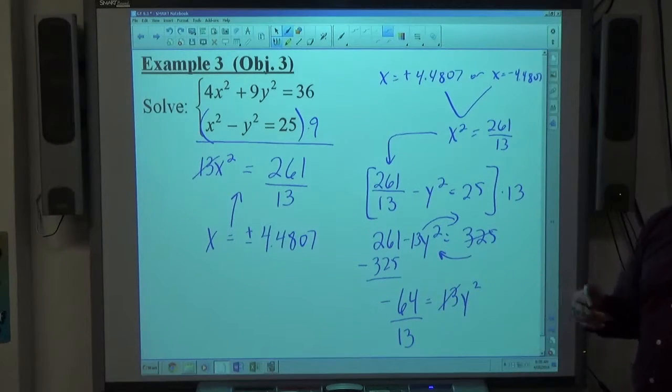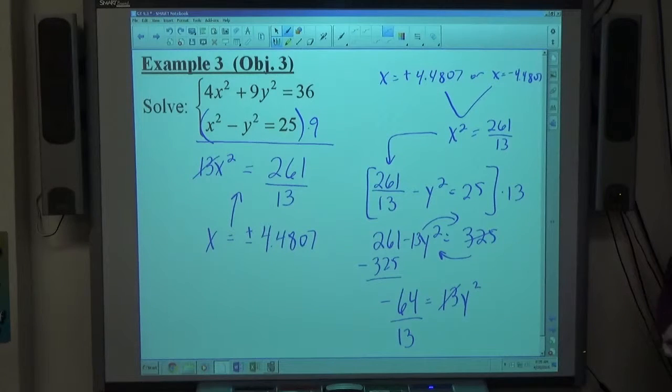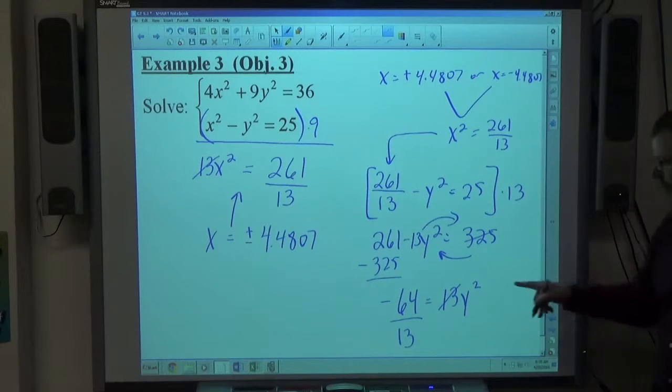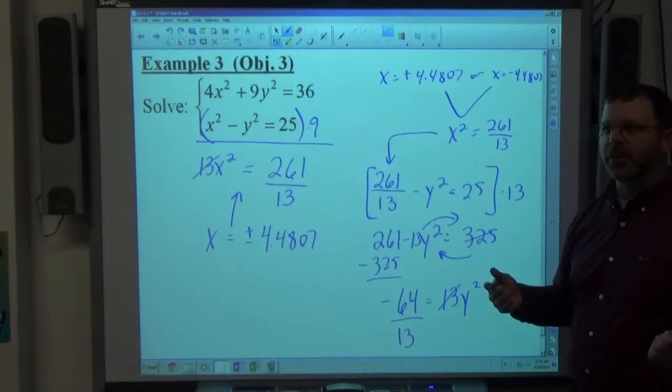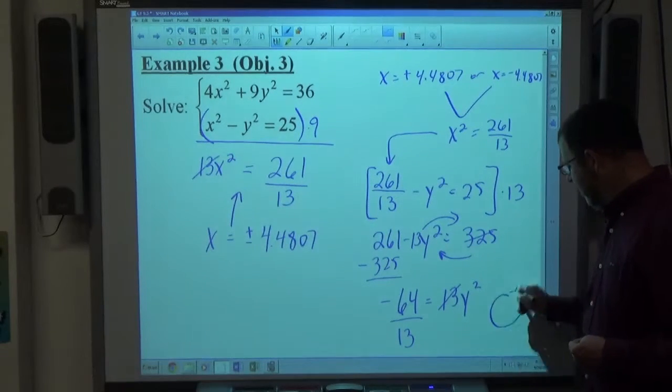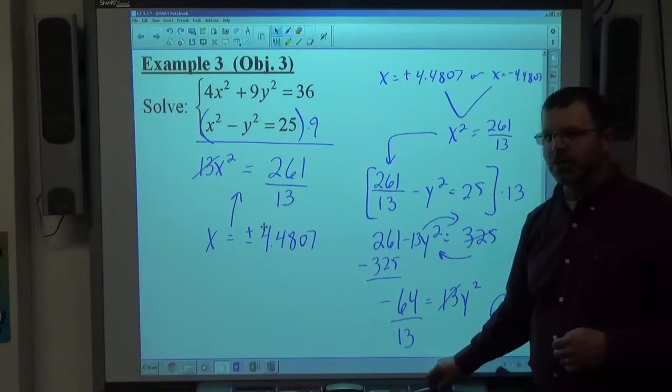All of a sudden, you get y squared equals a negative number. That means y is going to be imaginary. We don't want imaginary answers on these problems, we want real answers. So once we get to an imaginary situation in a nonlinear system, that simply means it's not going to intersect. This is an empty set answer. There are no solutions.